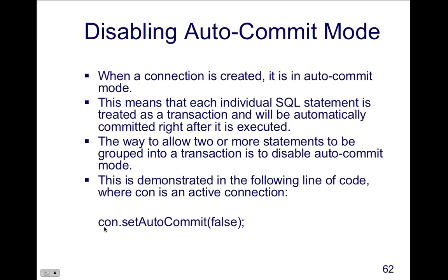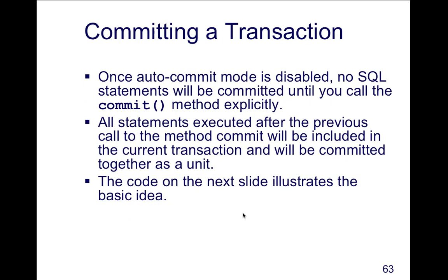To group two or more statements together in a transaction, disable auto commit. This is done on the connection object: connection.setAutoCommit(false). If you're running more than one transaction and need to check the error code on each, then you commit — you send a commit after that. The following line of code turns auto commit to false, and then we run a commit. Once auto commit mode is disabled, no SQL statement will be committed until you call commit() or rollback(). You call rollback() and that $400 gets put back into the first account it was taken from.